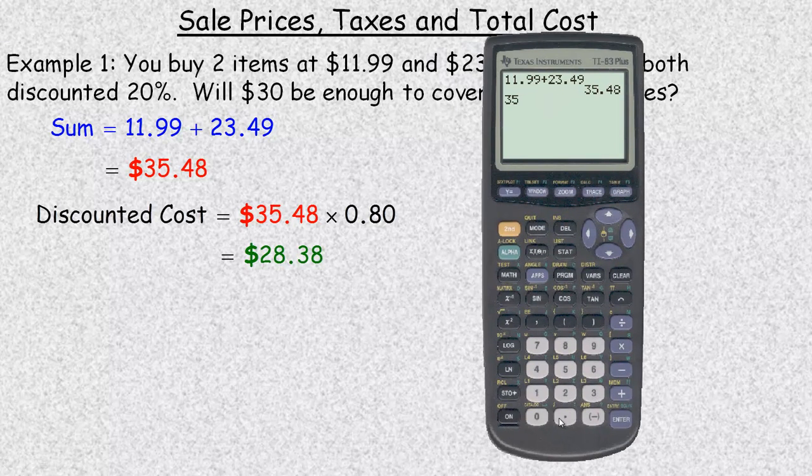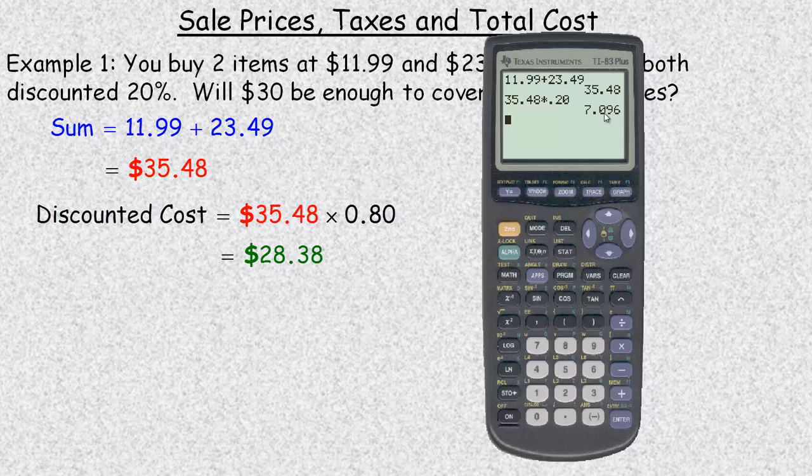A different way to do that: we could take that $35.48 and multiply it by 0.20 to find 20% of that, which is $7.10. So $35.48 minus the $7.10 gives us $28.38.